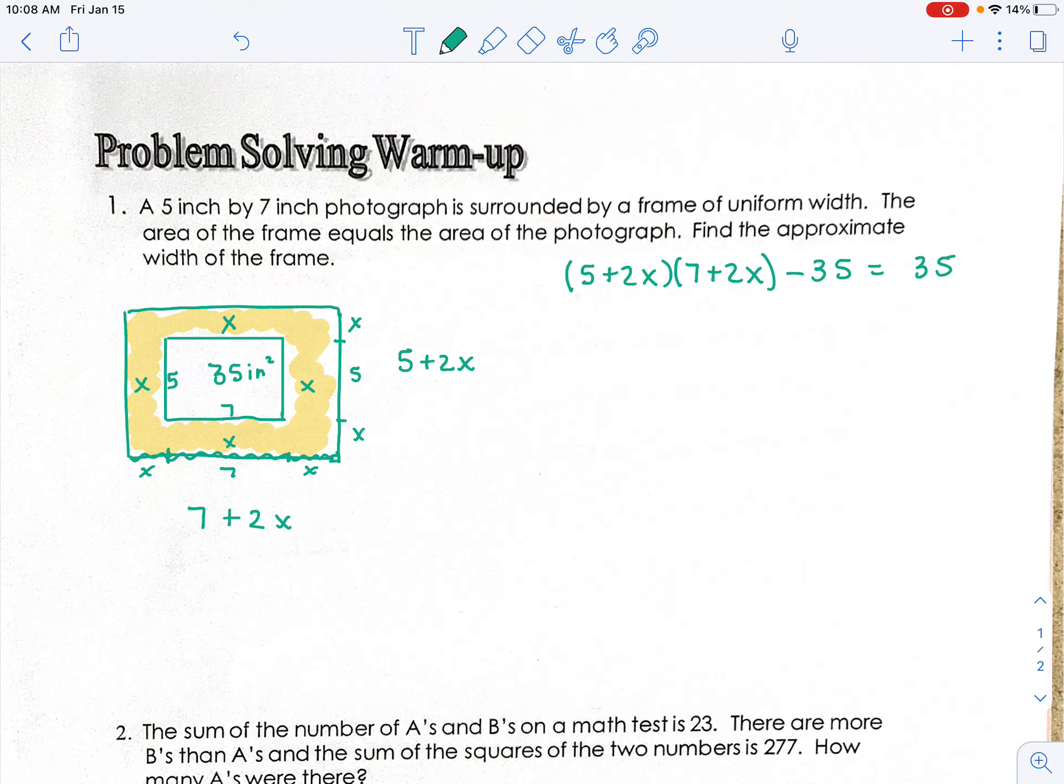should equal the area of the frame. They tell us the area of the frame is the same as the area of the photograph, which is 35. From here we've got to solve for x.